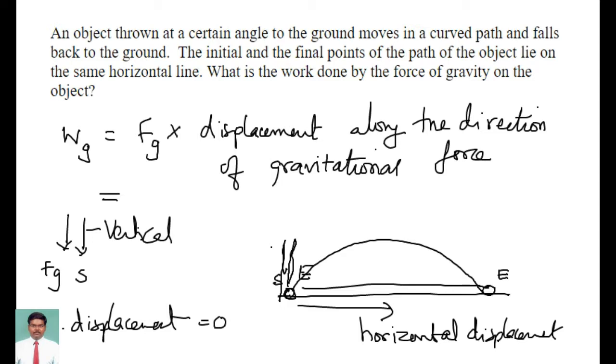So for calculating the work done, what I need is the force of gravity. The force of gravity is acting in the downward direction, and the vertical displacement, I want to take it into account. But the vertical displacement, if I take, that will be equal to 0, because the starting point and end point, the vertical axis, this is going to be...